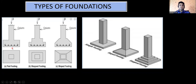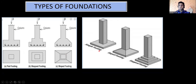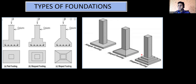Here we have a pad footing. Pad footing is also called as isolated footing, and few people call it as plain footing also. Then we have a step footing and a slope footing. In all three footings, one thing is common: there is only one footing below and over that we have a single column. So it's called as isolated footing — only one column will be there.